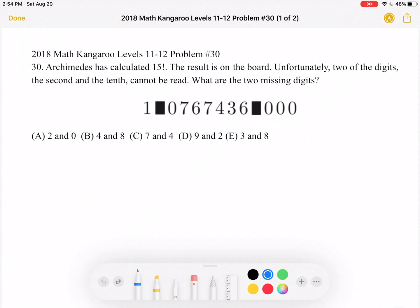This is the 2018 Math Kangaroo Levels 11-12 Problem Number 30. Archimedes has calculated 15 factorial. The result is on the board. Unfortunately, two of the digits, the second and the tenth, cannot be read. What are the two missing digits?